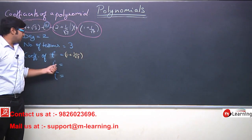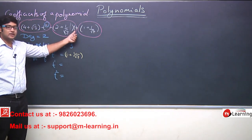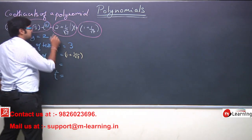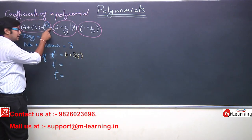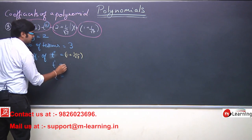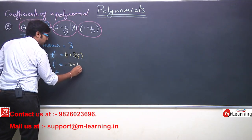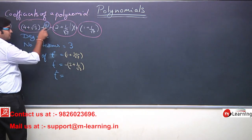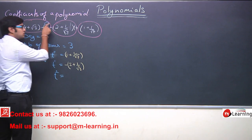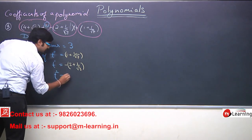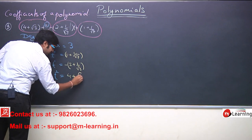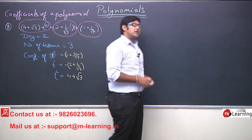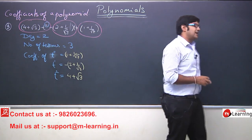What is the coefficient of t ki power 1? This is t, t ki power 1. Iske sath associated constant term ye wala hai. And notice, यहाँ पे minus लगा हुआ है. So, the coefficient of t ki power 1 is minus (2 + 1/√3). This is the coefficient of t ki power 1. Now, what is the coefficient of t ki power 2? That is t square. The coefficient will be (4 + √3). So, these are the coefficients of t⁰, t¹, and t².